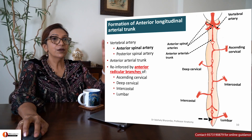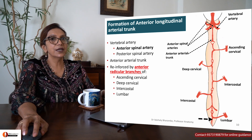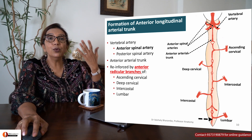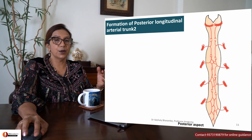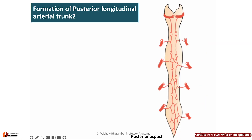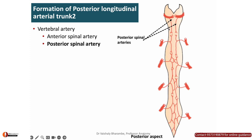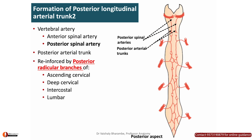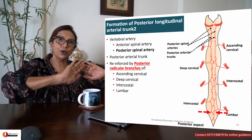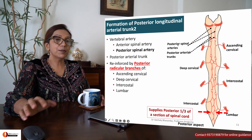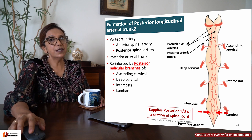The single anterior longitudinal arterial trunk is present anteriorly throughout the spinal cord, supplying the anterior two-thirds of the spinal cord. Posteriorly, the two posterior longitudinal arterial trunks descend, receiving additional supply from ascending cervical, deep cervical, intercostal, and lumbar arteries, supplying the posterior one-third of the spinal cord.